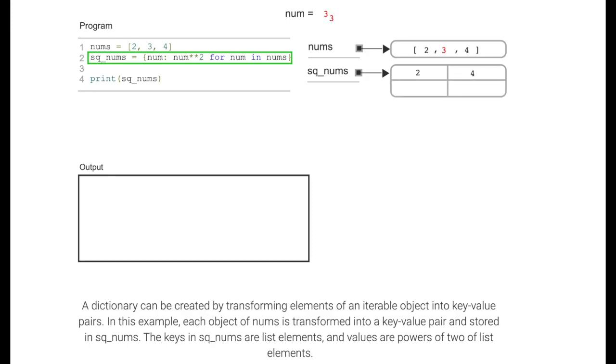The keys in sq_nums are list elements, and values are powers of two of list elements.